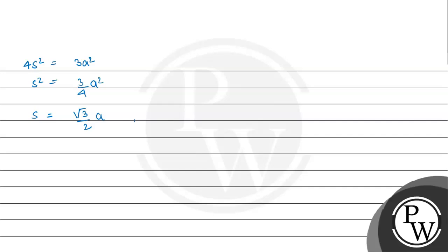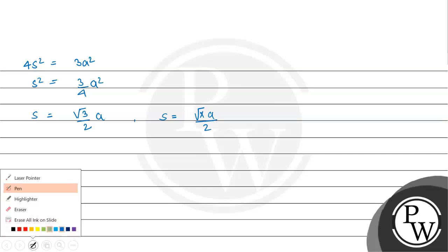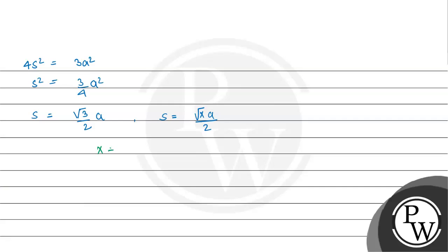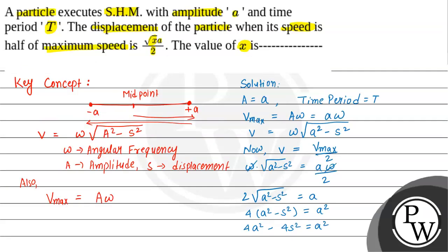Now comparing this result with the given expression: s = square root of x times a divided by 2. Comparing both, the value of x is equal to 3. This is the final answer of the given question. The value of x is 3. I hope you understood the solution. Thank you.